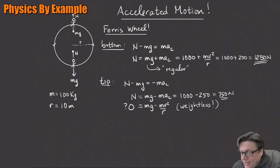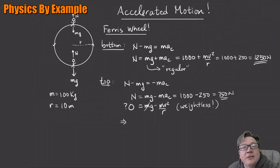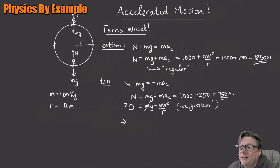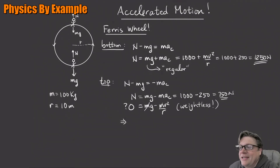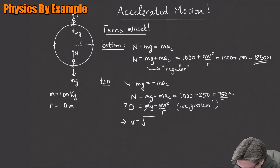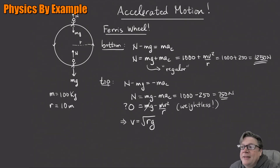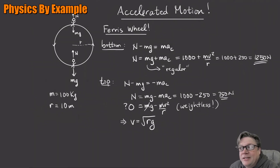When N = 0, notice the masses cancel — so everything comes off the seat at the same time regardless of mass. You, a small child, whatever — it doesn't matter what the mass is; everything is weightless at the exact same moment. So what speed would cause you to come out of your seat and feel weightless?